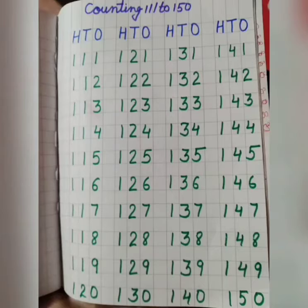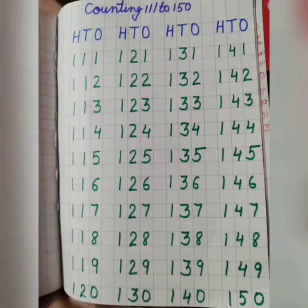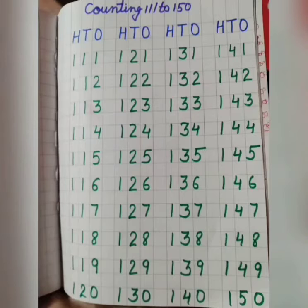One hundred eleven, one hundred twelve, one hundred thirteen, one hundred fourteen, one hundred fifteen, one hundred sixteen, one hundred seventeen, one hundred eighteen, one hundred nineteen, and one hundred twenty, one hundred twenty one, one hundred twenty two.